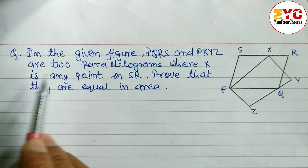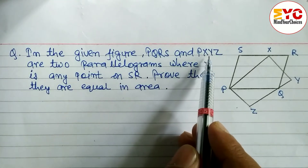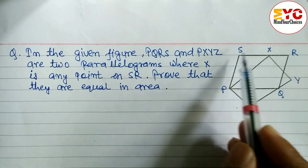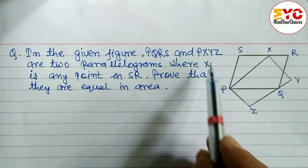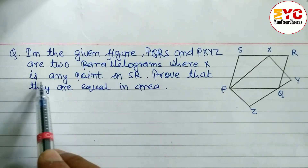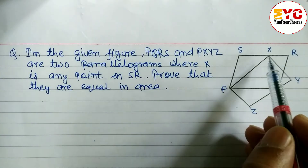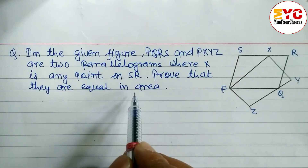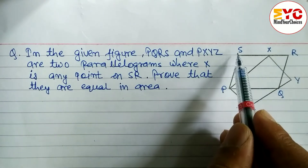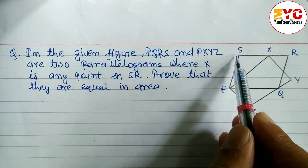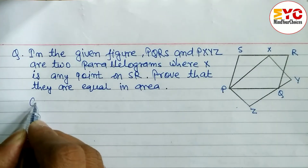We have a question. In the given figure, PQRS and PXYZ are both parallelograms, where X is any point on SR. We have to prove that they are equal in area — meaning we have to prove that area of PQRS and area of PXYZ are both equal.